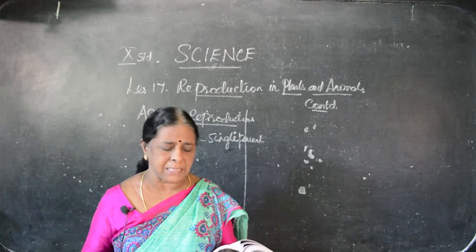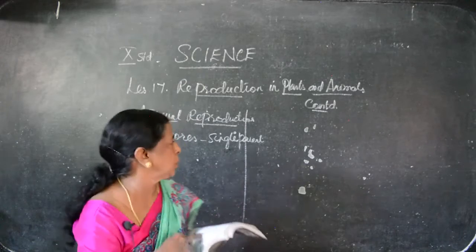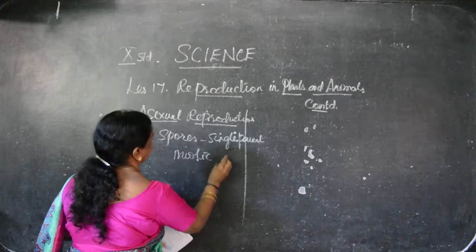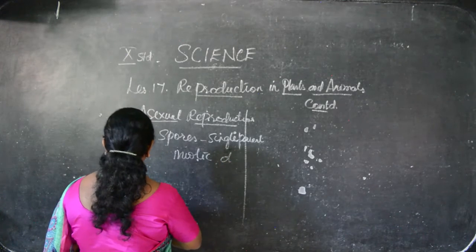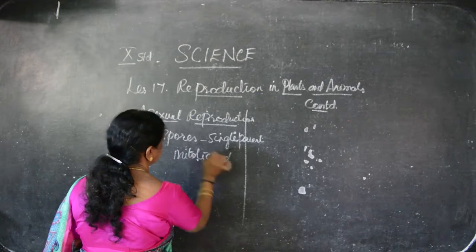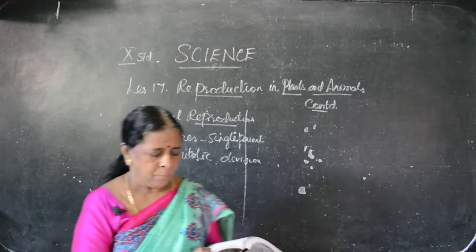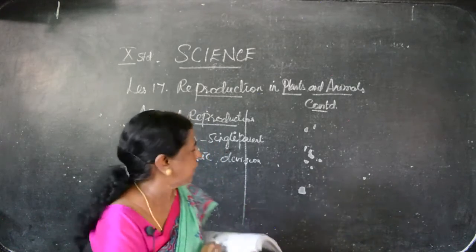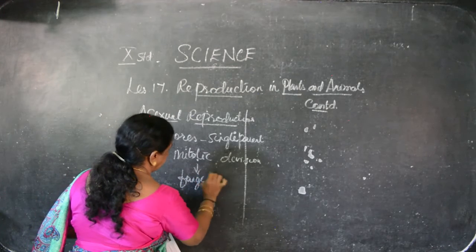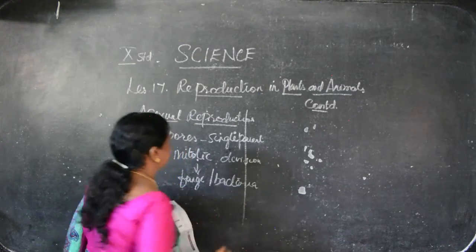In asexual reproduction there is only meiotic division — no mitotic division. The cell division is meiotic. For example, they reproduce by spores. Fungi and bacteria are examples — both come under plants. They reproduce by producing spores.